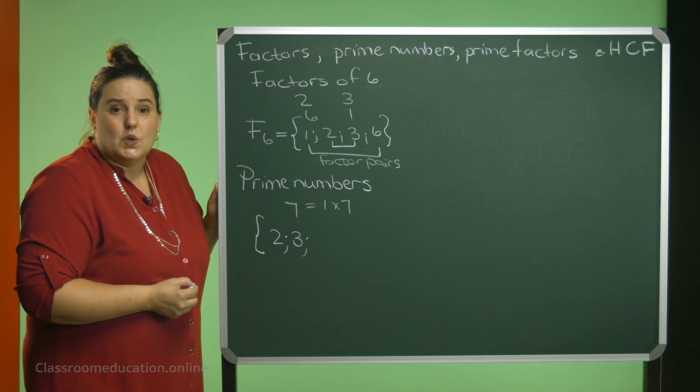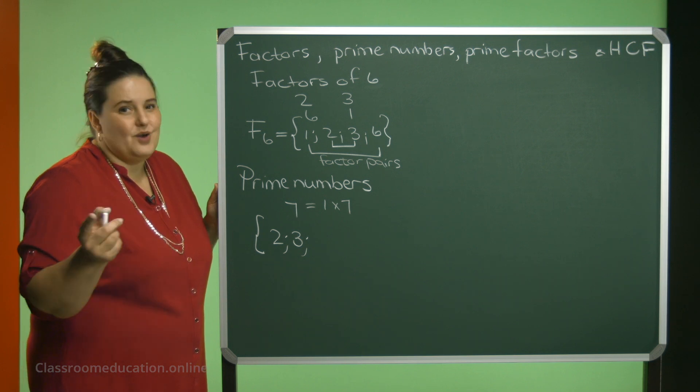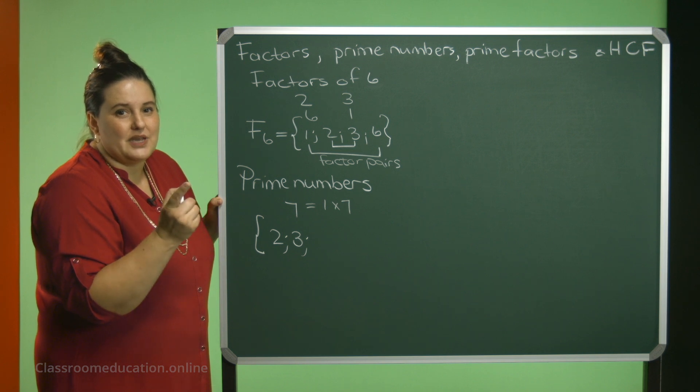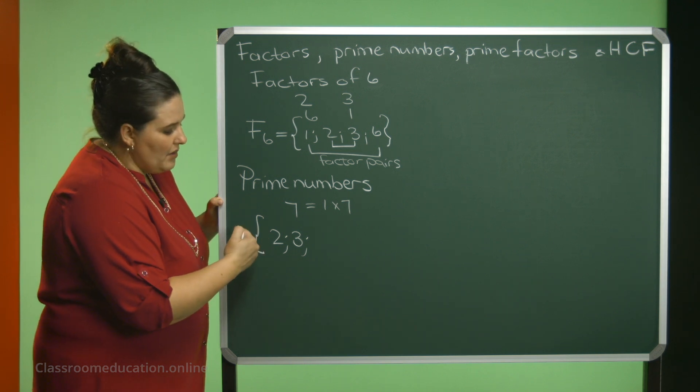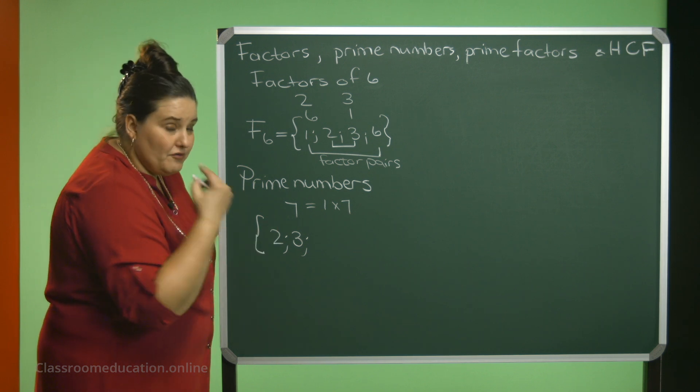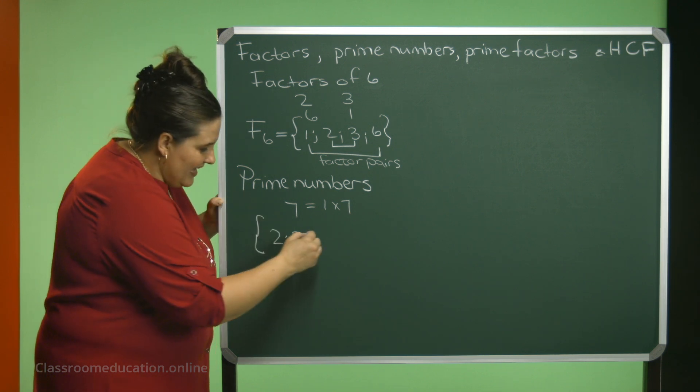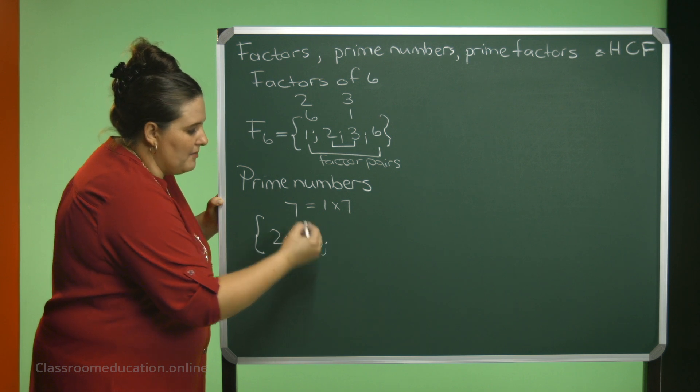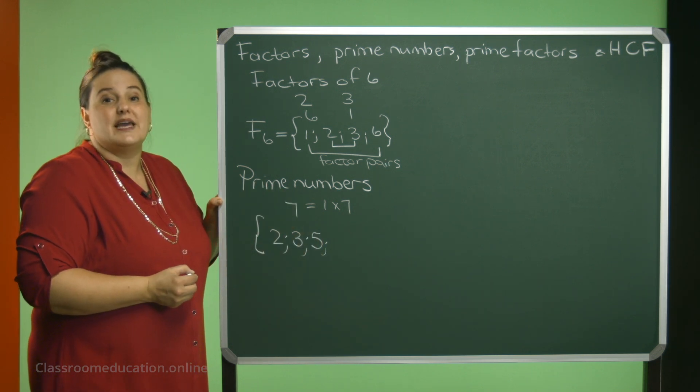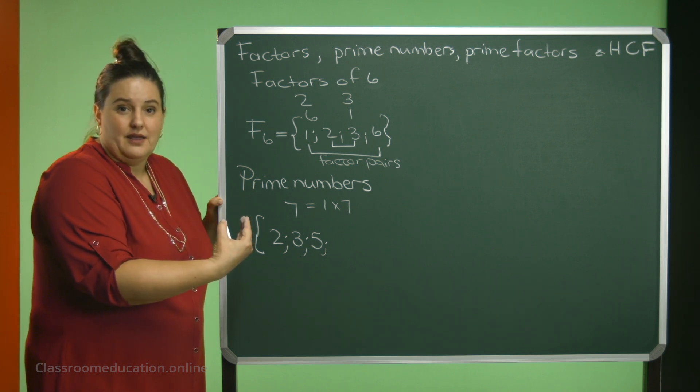How about 4? No, I can also say 2 times 2. So, 2 times 2 is also a factor pair. So 4 is not a prime number. How about 5? Yes, 5 will be a prime number. 6? No, because I can say 2 times 3.